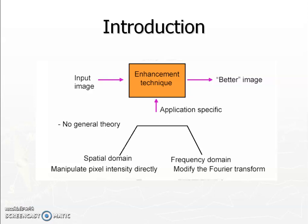Image enhancement is application specific — a technique which works for one application may not work for another. We have an input image, we apply an enhancement technique specific to the application, and we obtain a better image. We can do this either in the spatial domain, which directly manipulates pixel values, or in the frequency domain, where we transform the image, do modifications, and come back to the spatial domain.